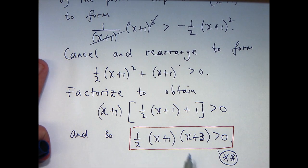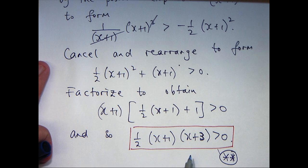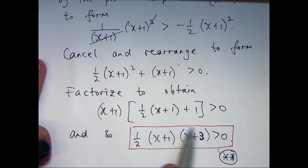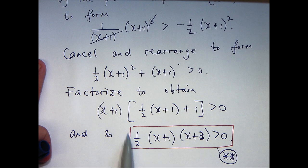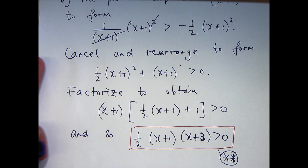Now you can solve this algebraically by seeing where the expressions in each bracket is positive and negative but that's quite complicated. So what I like to do is draw a graph of the left hand side and just visually see where it lies above the x axis. So let's do that.